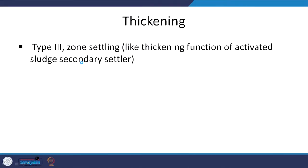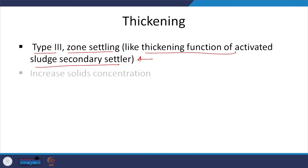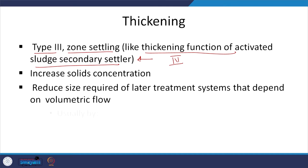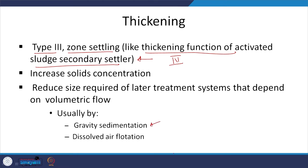Type 3 is zone settling, where you have a clear interface between relatively clear water with lower solid concentration at the top and solids at high concentration below. Much further down you see compression settling — Type 4. This is like the thickening function of the activated sludge secondary settler, which we discussed in that context. Most widely used is gravity sedimentation. Sometimes dissolved air flotation is used depending upon the type of sludge.